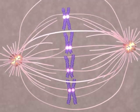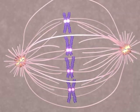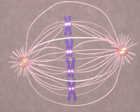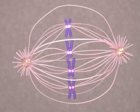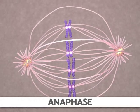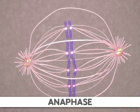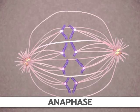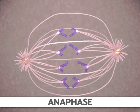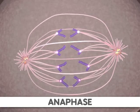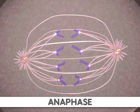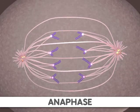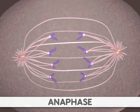This occurs during anaphase through a shortening of the microtubules attached to the kinetochores. Additionally, the poles of the cell move farther apart, causing increased separation of sister chromatids. At the end of anaphase, the sister chromatids have moved to the two ends of the cell.